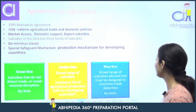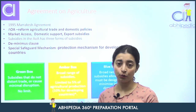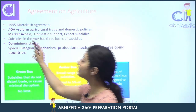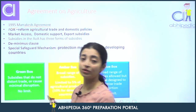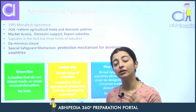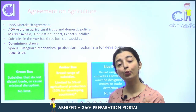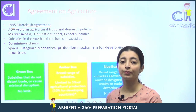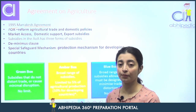Sabse pehle Agreement on Agriculture — kab sign hua? Year 1995 mein, Marrakesh Agreement ke baad sign hua. Humne pehle bhi dekha tha ki Uruguay Round mein negotiations hoi aur Marrakesh Agreement ke baad Agreement on Agriculture ratify ho gaya.